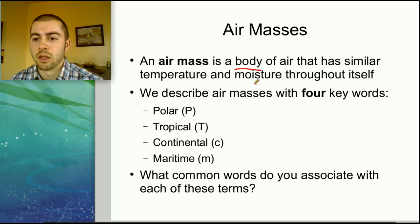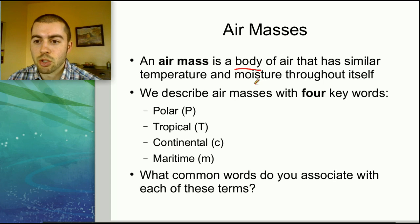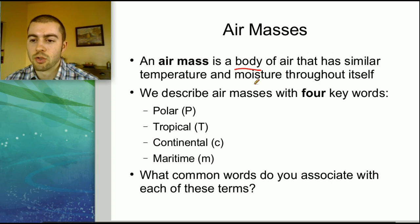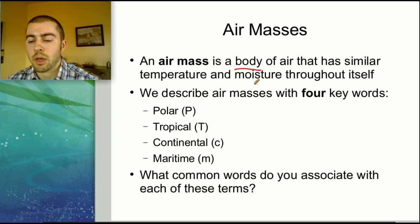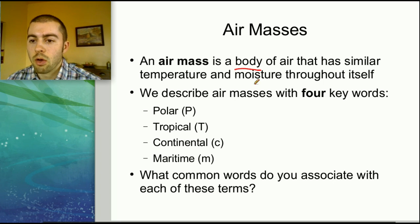This doesn't mean that the temperature is going to be exactly the same throughout an entire air mass. It's not like a warm air mass will be exactly 80 degrees all across it. But all the temperature through the air mass will be generally warm in that case, or maybe the air mass will be generally moist, with a lot of humidity in the air. So we're looking at a whole bunch of air that basically has similar properties.